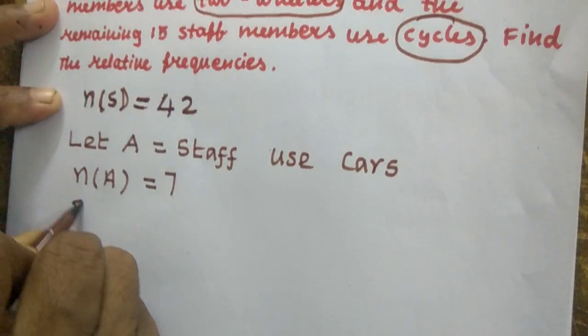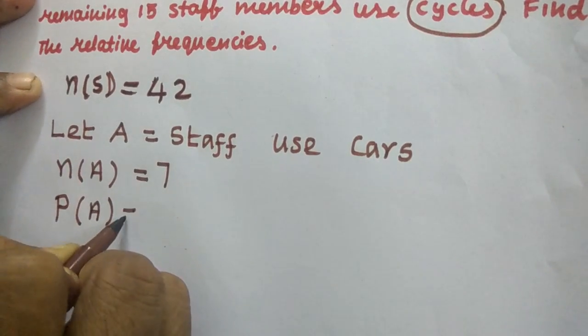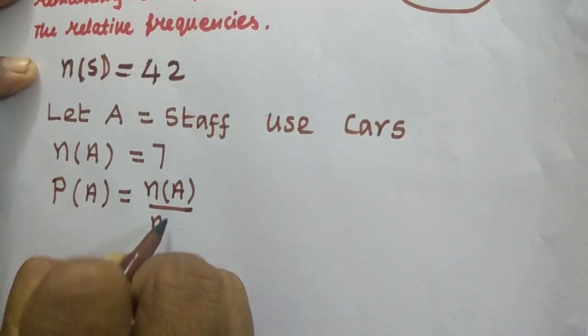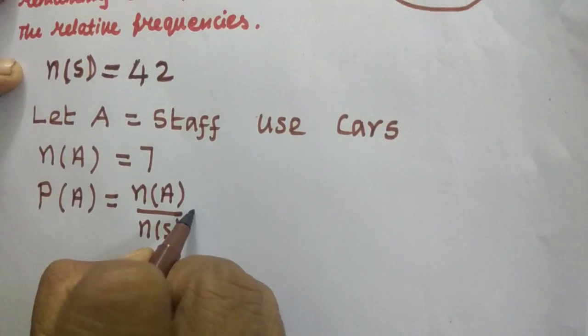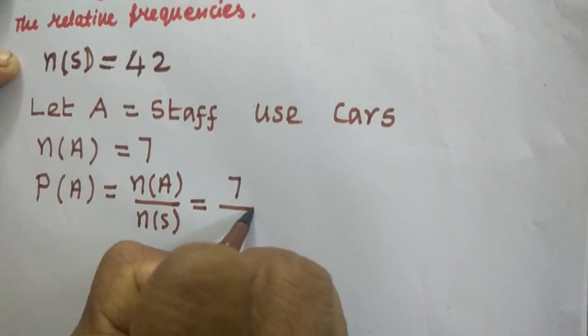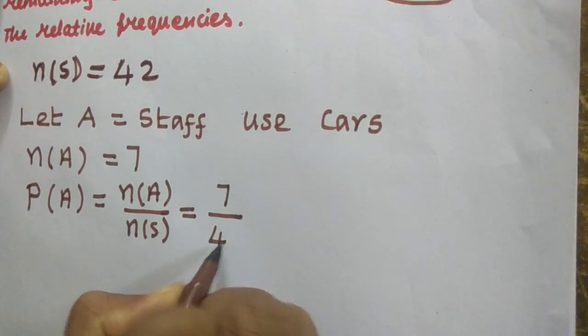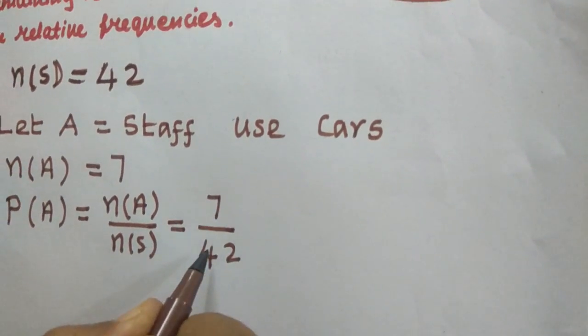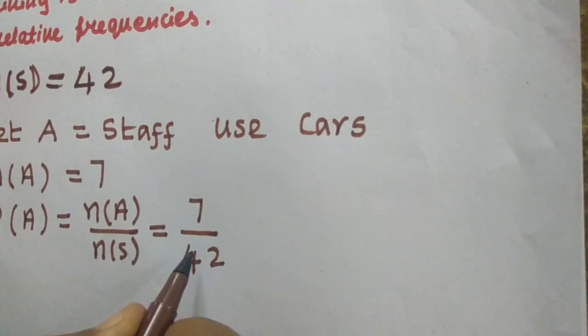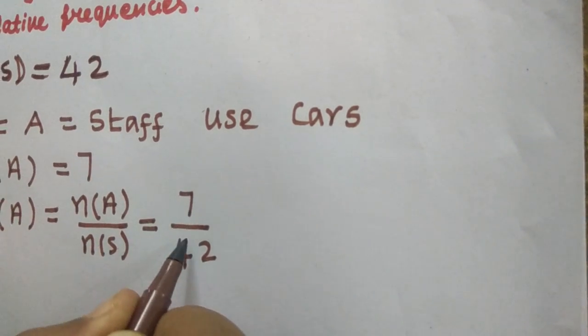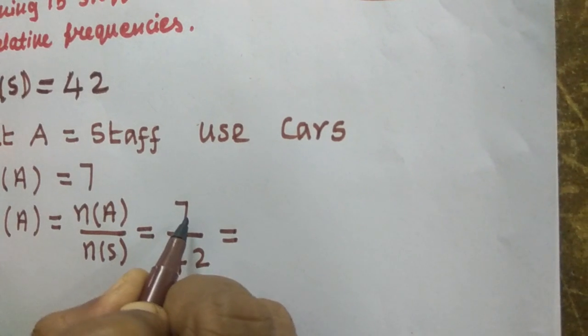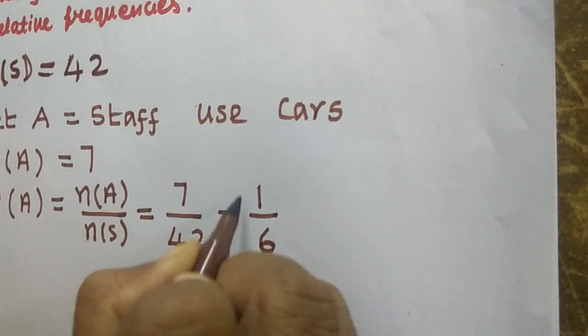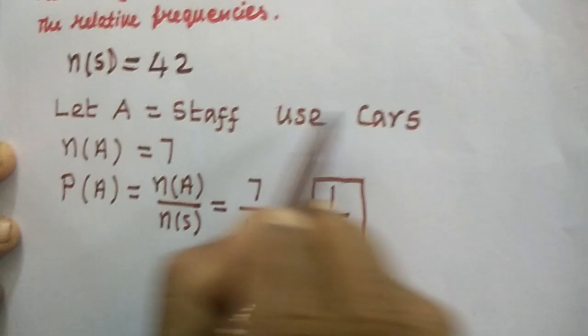Now you want to find out the probability. P of A equal to, what is the formula for probability? N of A divided by N of S. So what is N of A here? 7 divided by what is N of S? 42. You should not stop here. You have to see both numerator and denominator. If you are able to give it in simplest form, you have to reduce and give it in simplest form. So I am taking 7 table here. 1 times 7 is 7, 6 times 7 is 42. So one category we have completed.